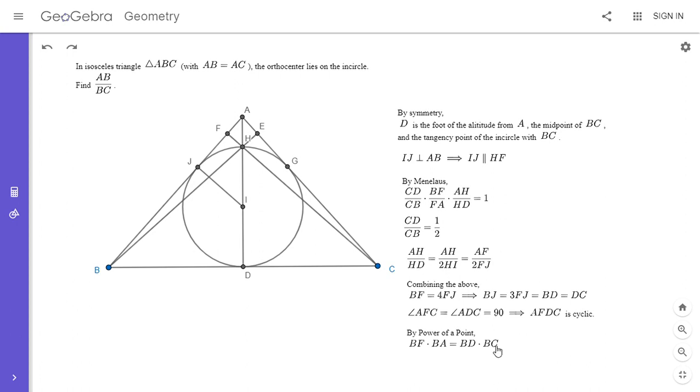So this is the part where I simplified Rom's original proof, which used a little more calculation. So AB over BC is equal to BD over BF. And BD we set up here was equal to 3FJ. And BF from here is equal to 4FJ. And so if you substitute those two, you get 3FJ over 4FJ, which is three-fourths.